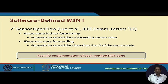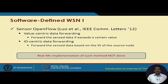Different solutions have been proposed to address these challenges. One relatively recent work published in IEEE Communications Letters in 2012 is the Sensor OpenFlow protocol. It handles forwarding in two ways: value-centric data forwarding, where data is forwarded if it exceeds a certain threshold value, and ID-centric data forwarding, where data is forwarded based on the source node's ID. A limitation of this solution is that a real-life implementation is not yet available.